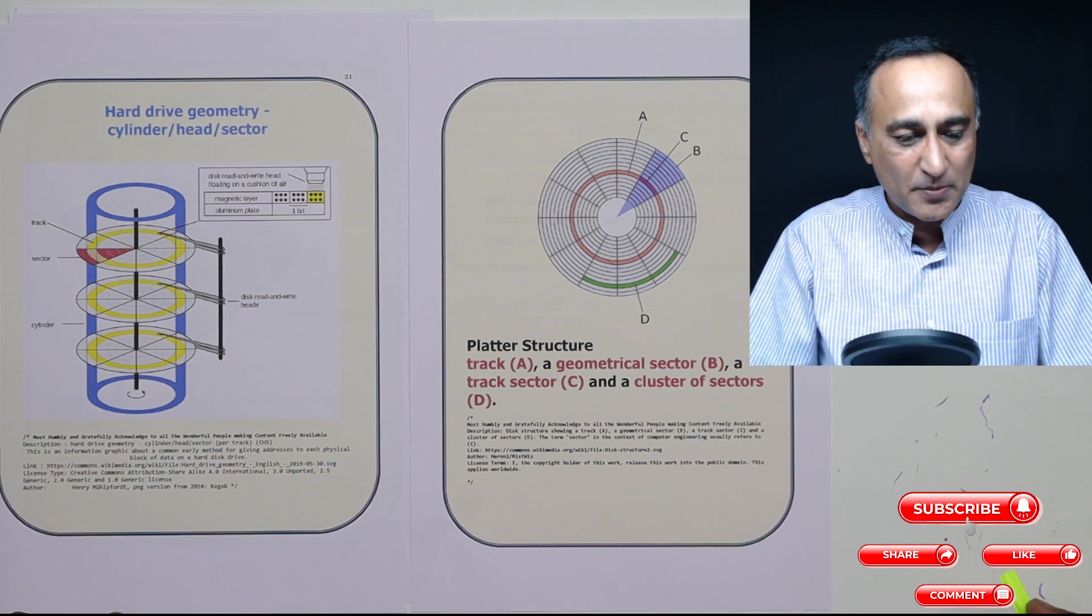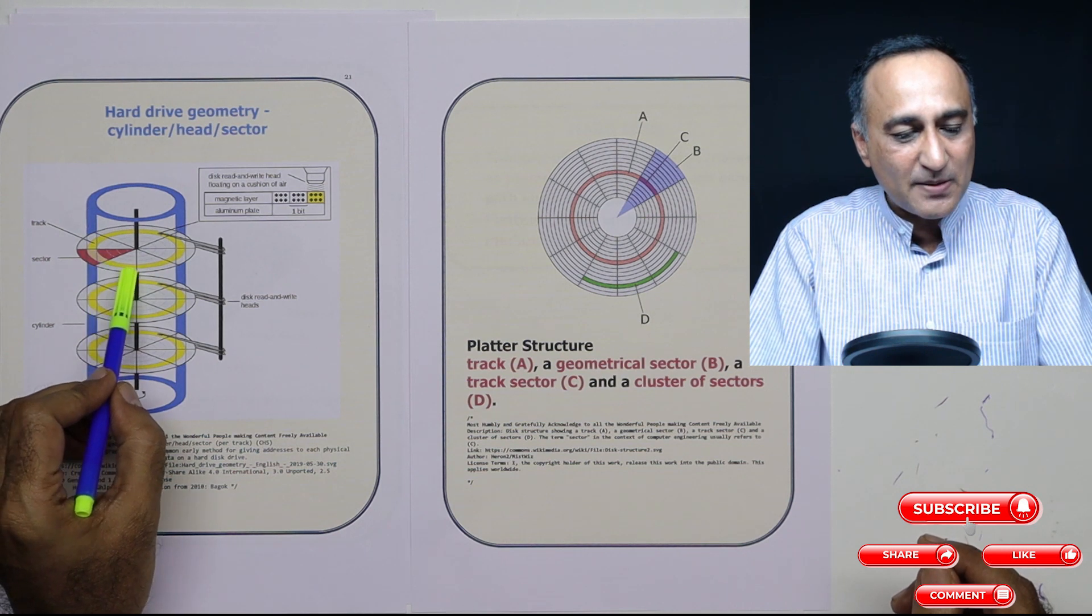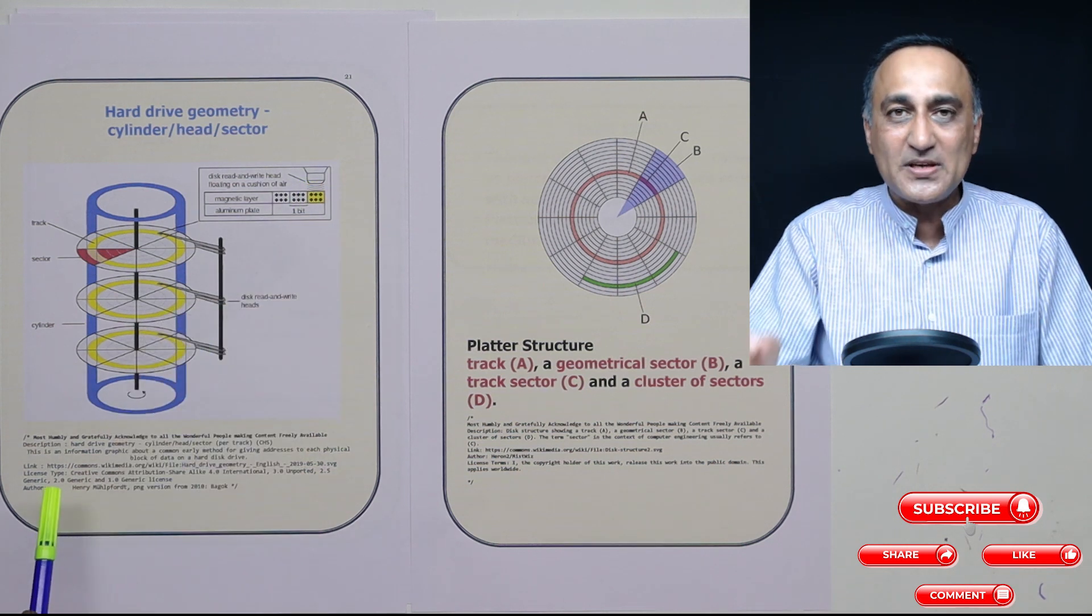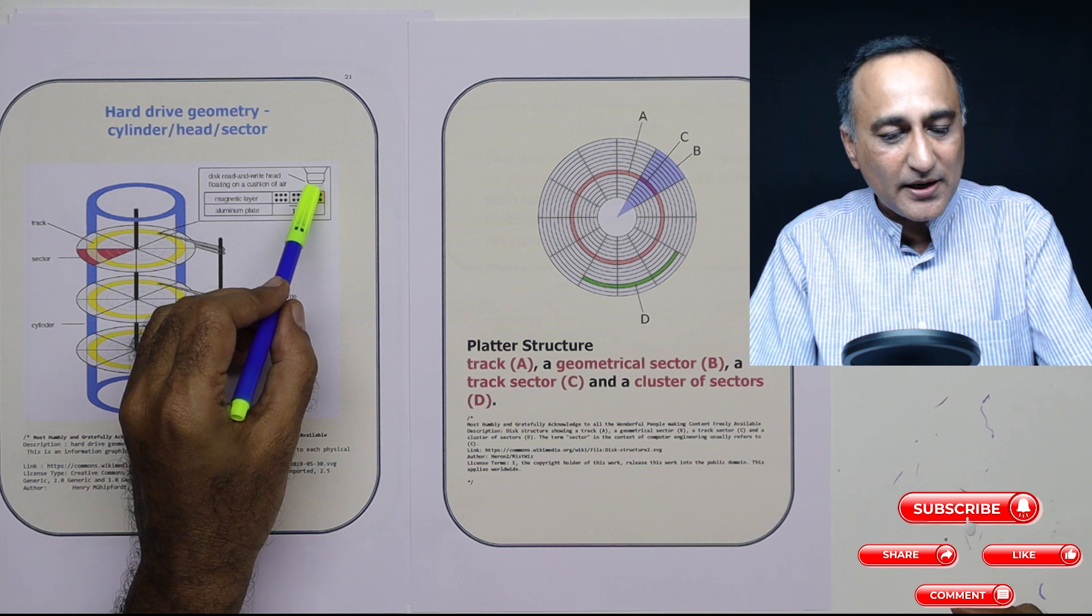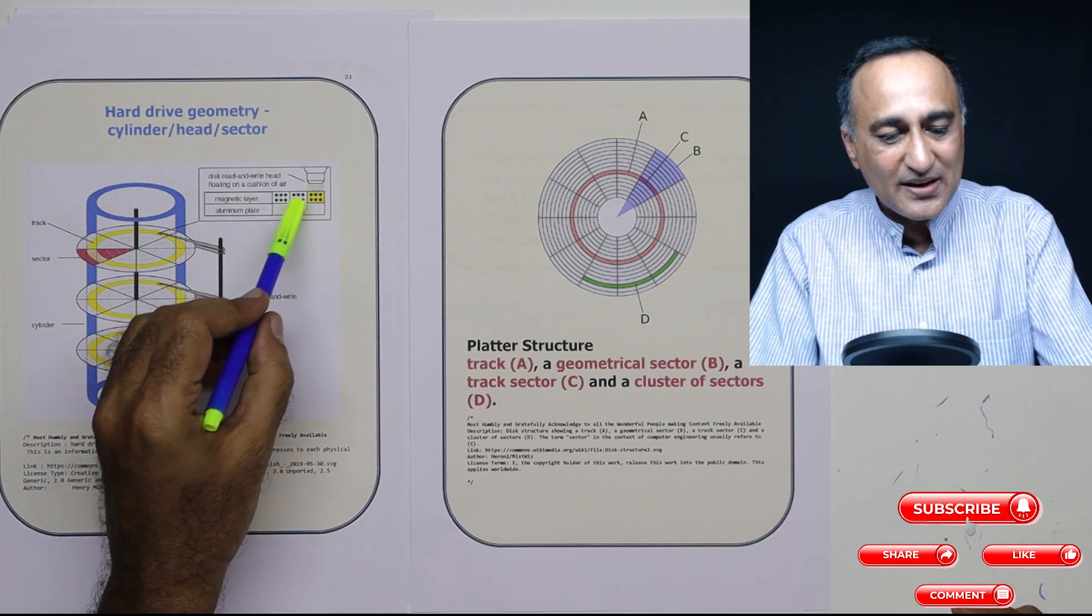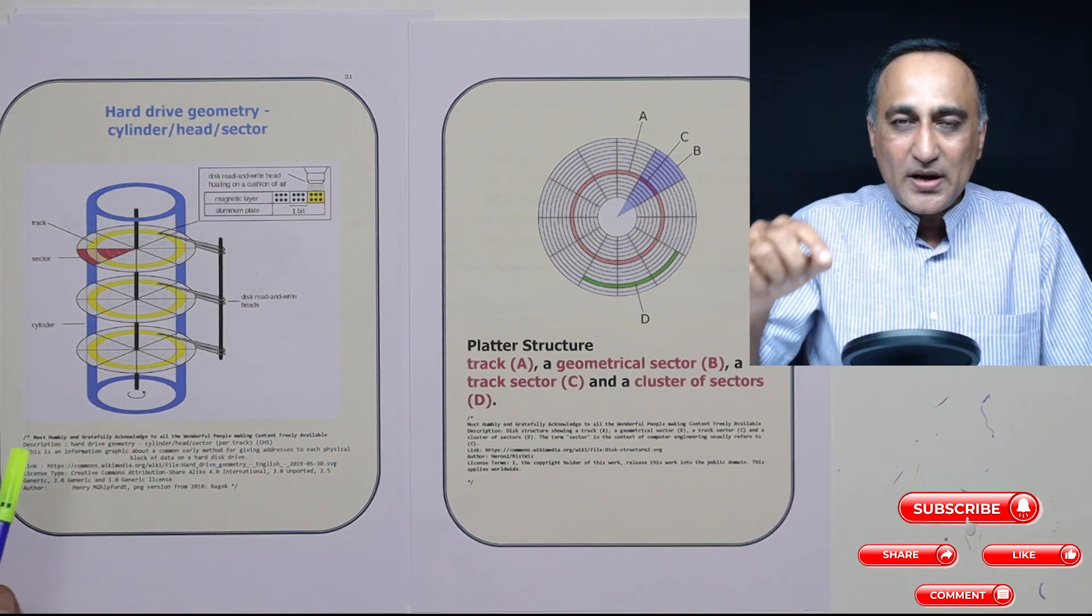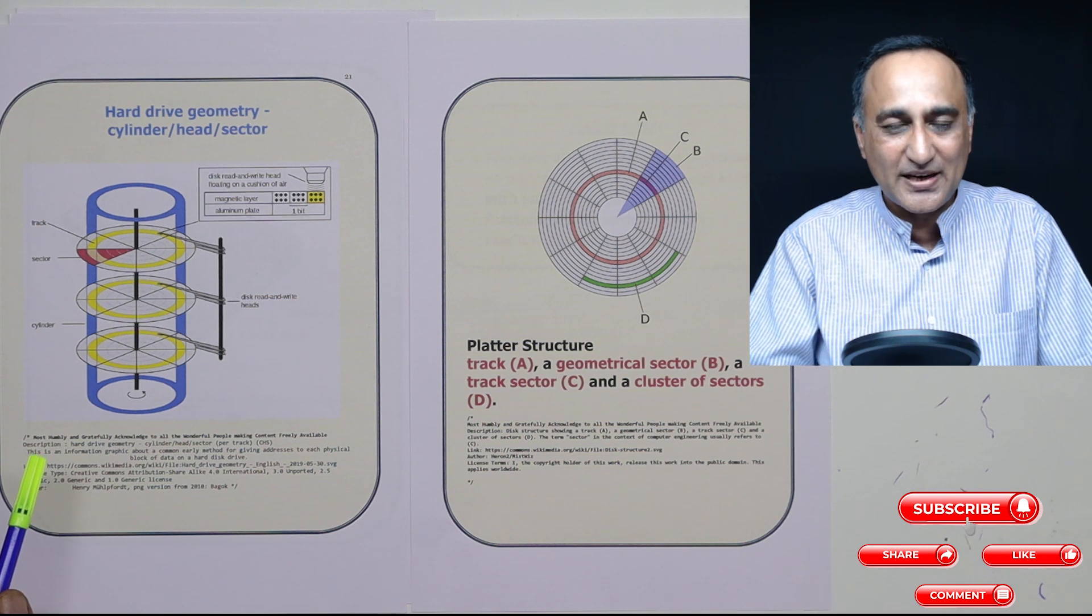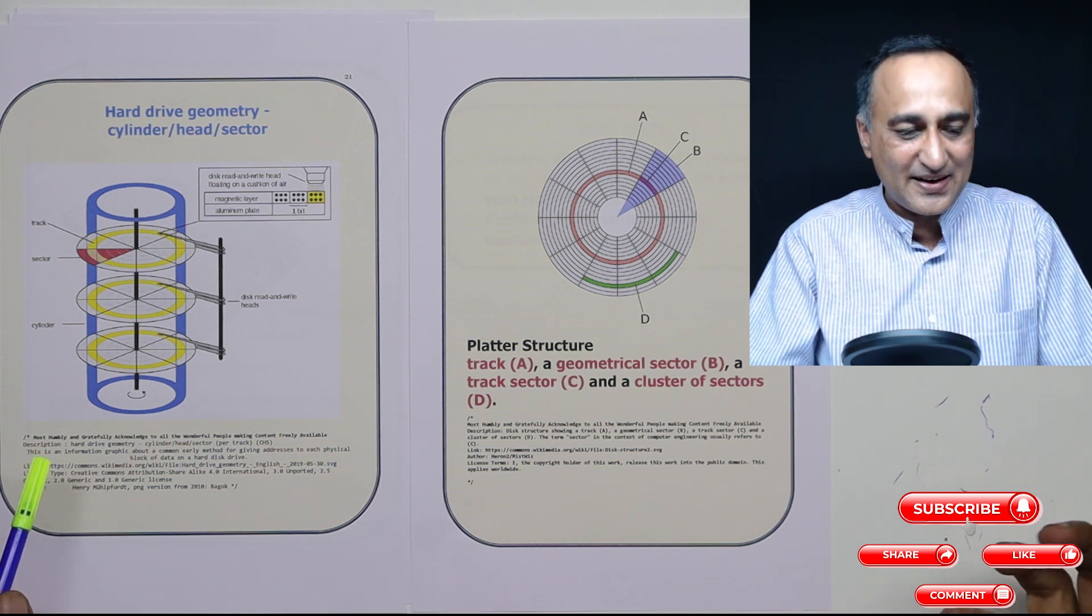So that is the design geometry. Now, on this aluminum plate or glass fiber material, you have a magnetic layer coated, and then you have an electromagnet which basically forms the read-write head. Using the electromagnet, there is a gap between the material and the electromagnet. As the head moves, looking at the polarity—whether it's north or south—it interprets the bit as ones or zeros. And that's how data is analyzed or read or written from the hard disk.